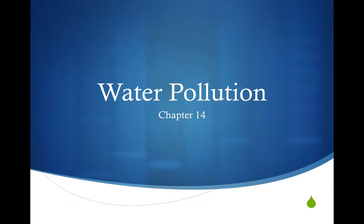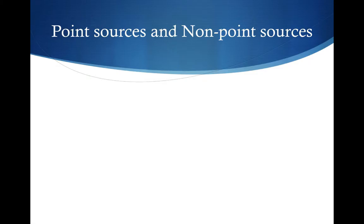Today we're going to talk about water pollution. This comes from the textbook Friedland and Relia, Environmental Science for AP, from the beginning of chapter 14. We're going to look at different types of water pollutants, their effect on the surroundings, and then what we can do about it.